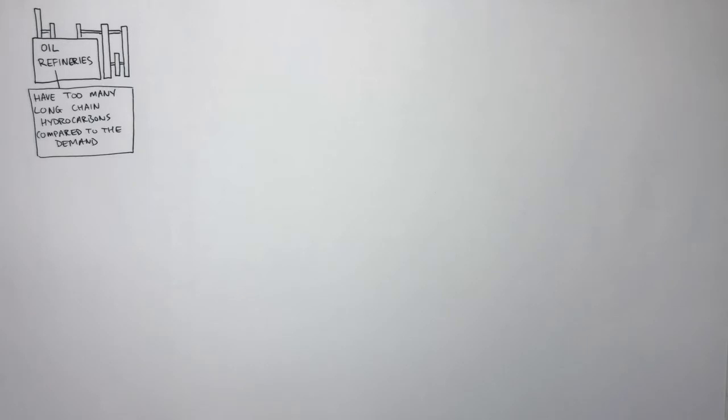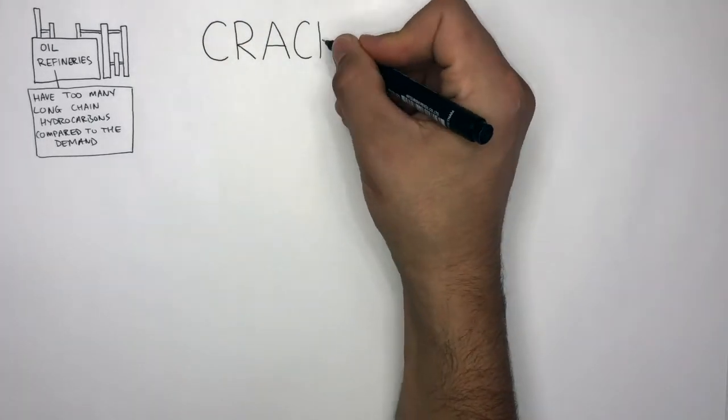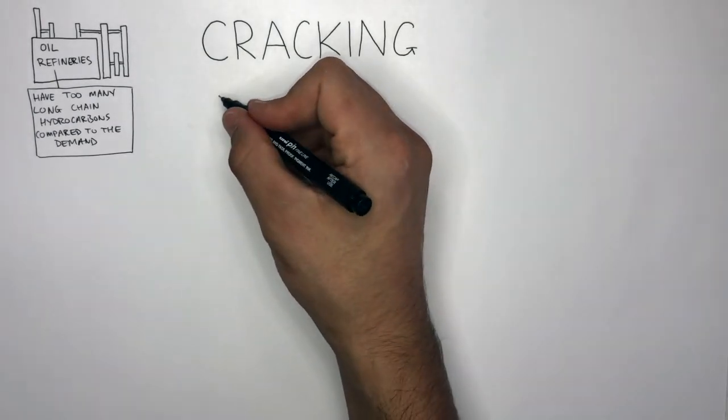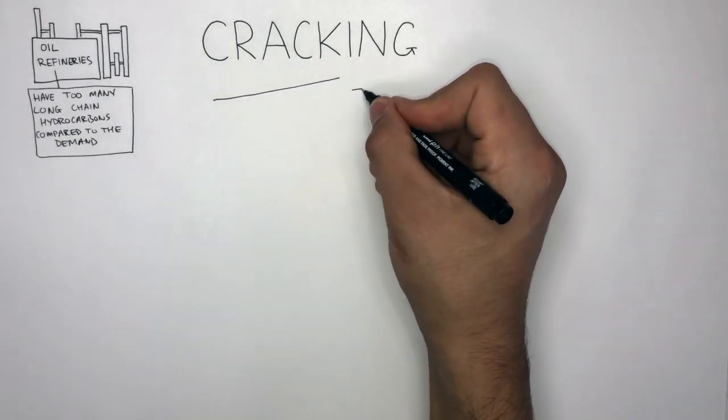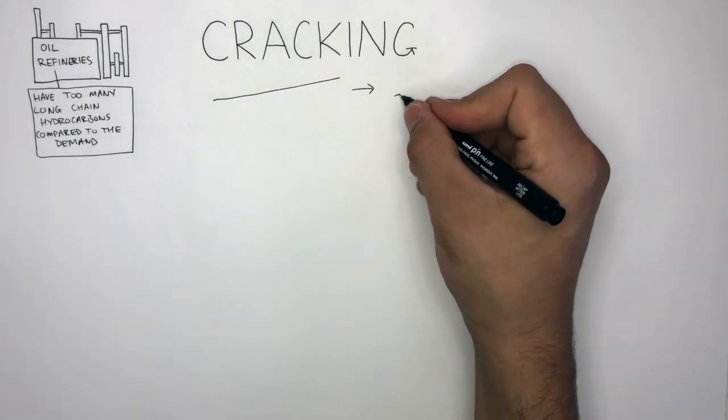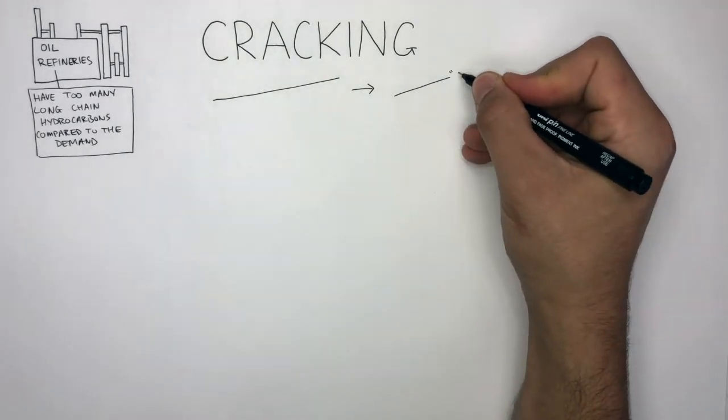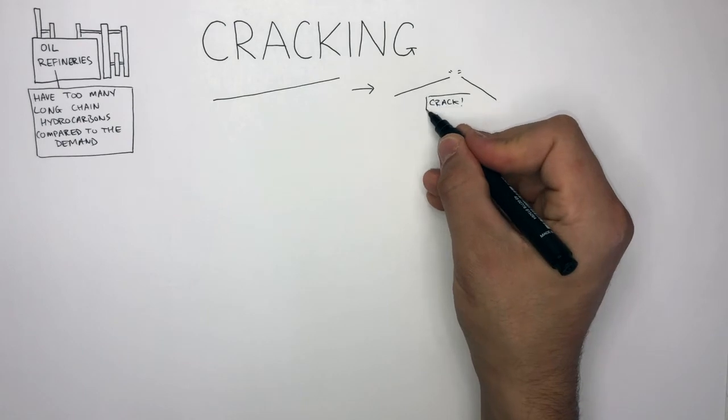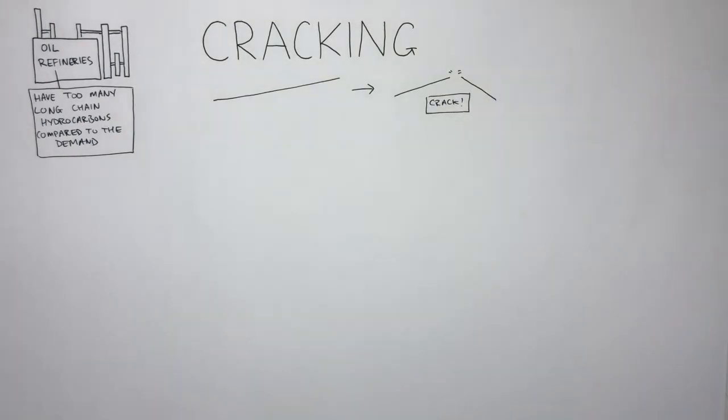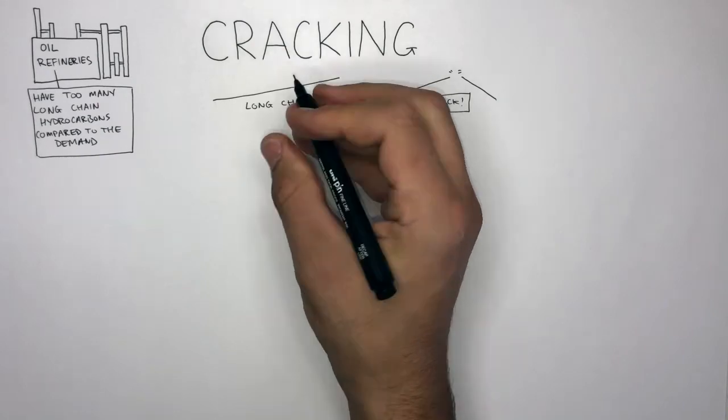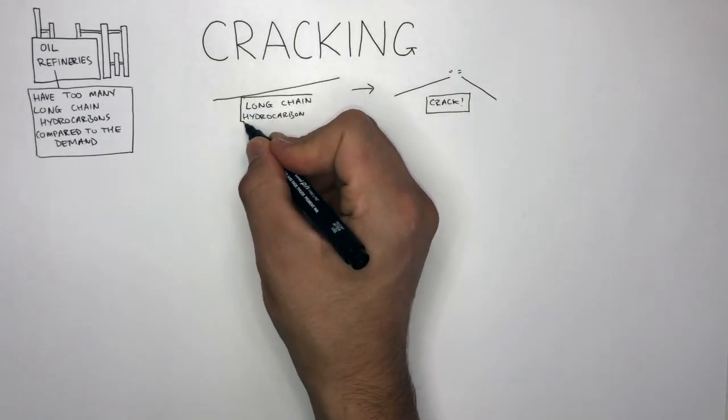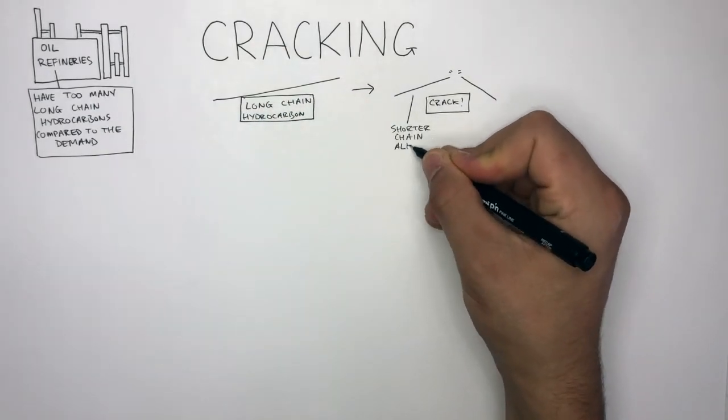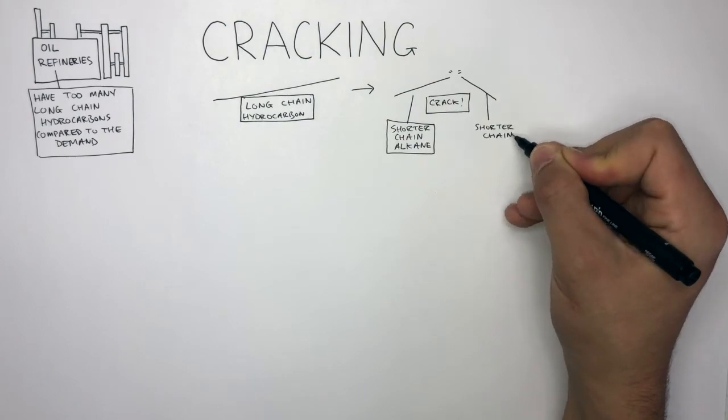To help meet the demands of the shorter chain hydrocarbons, we use a process called cracking. This is where a longer chain hydrocarbon is broken into two shorter chain hydrocarbons. We use the word crack, which means to break the covalent bonds between the atoms. So cracking is where the covalent bonds in a long chain hydrocarbon are broken, producing a shorter chain alkane and a shorter chain alkene.